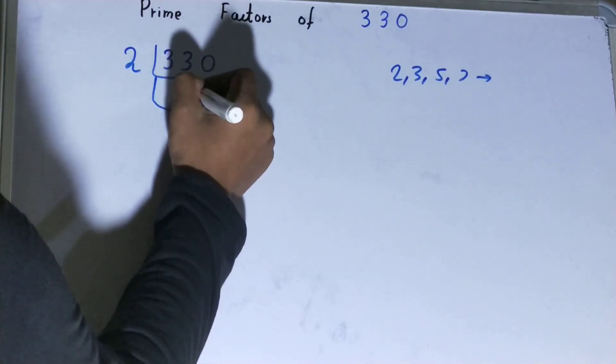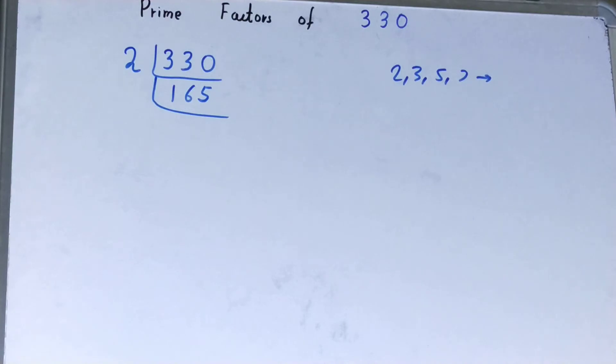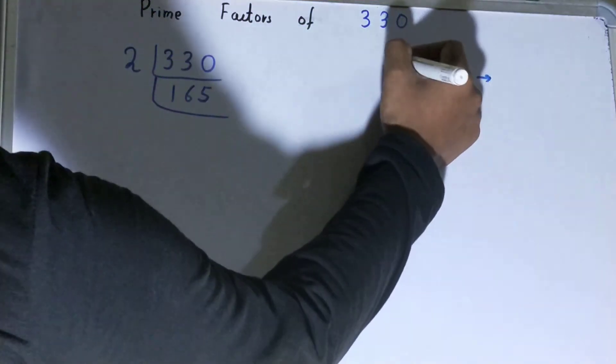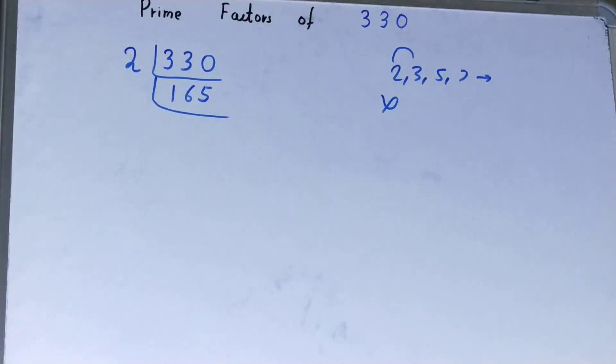Is this 165 divisible by 2? If you check it, it is an odd number so it is not divisible by 2. So we'll go to the next lowest prime number, that is 3.